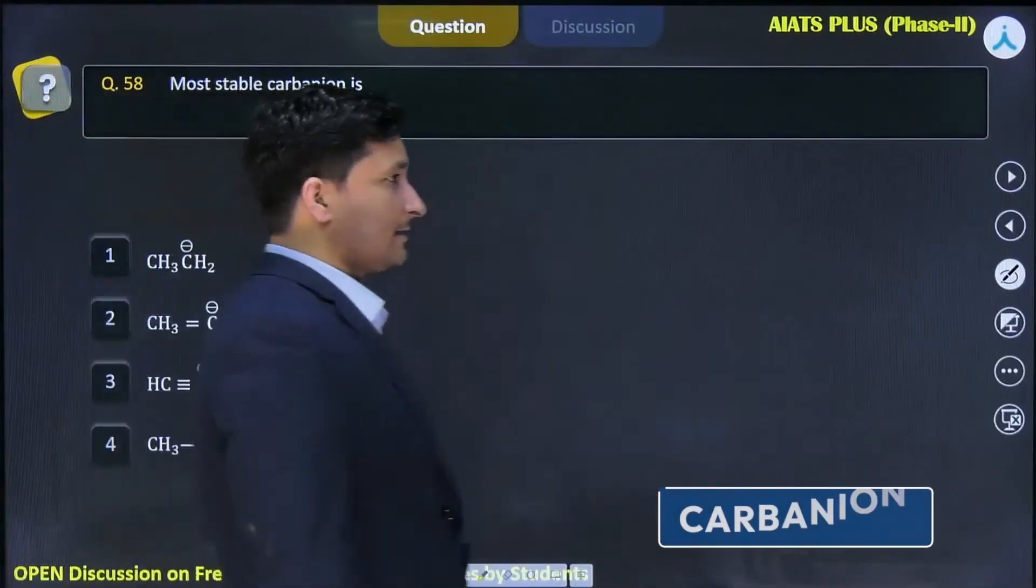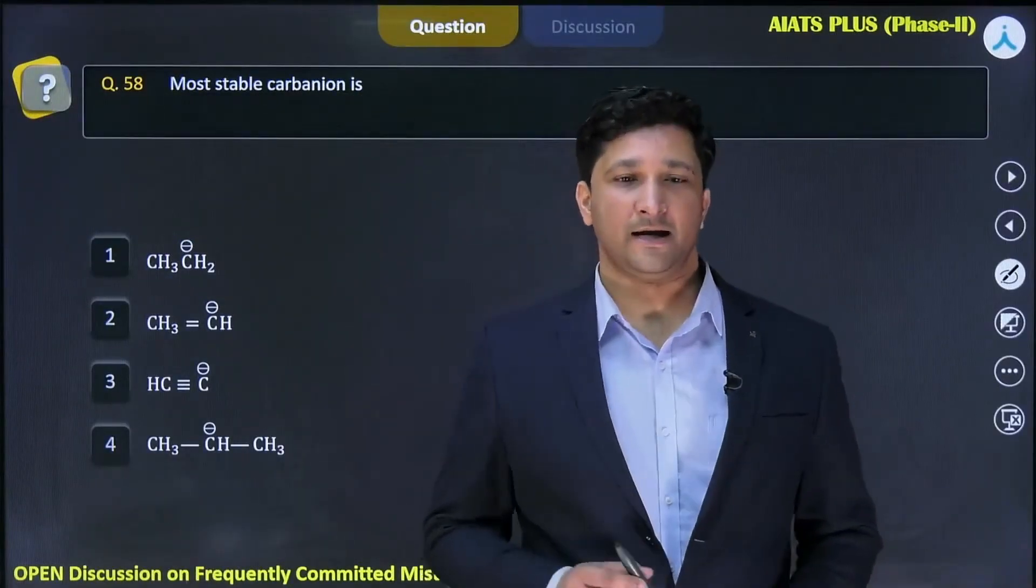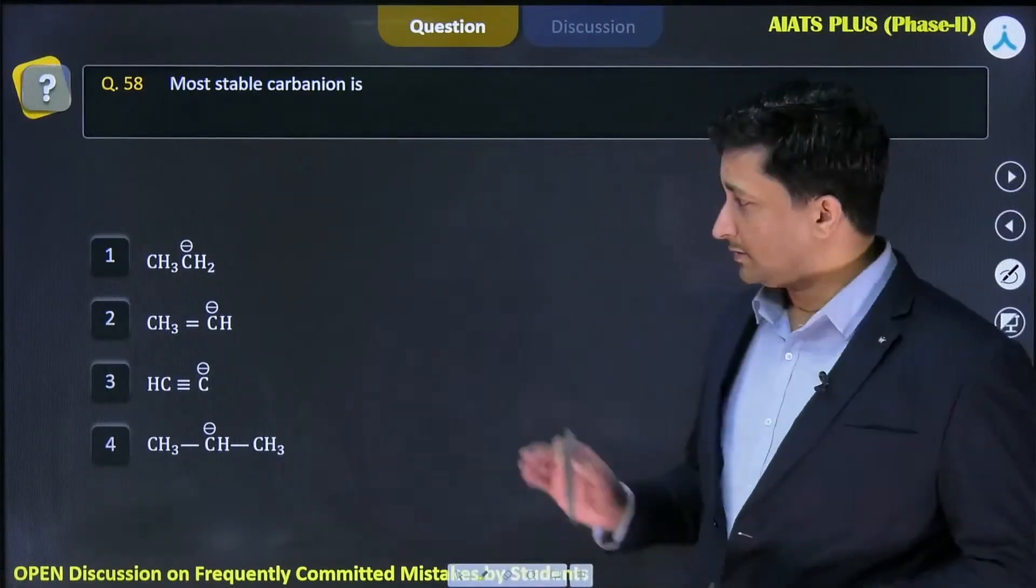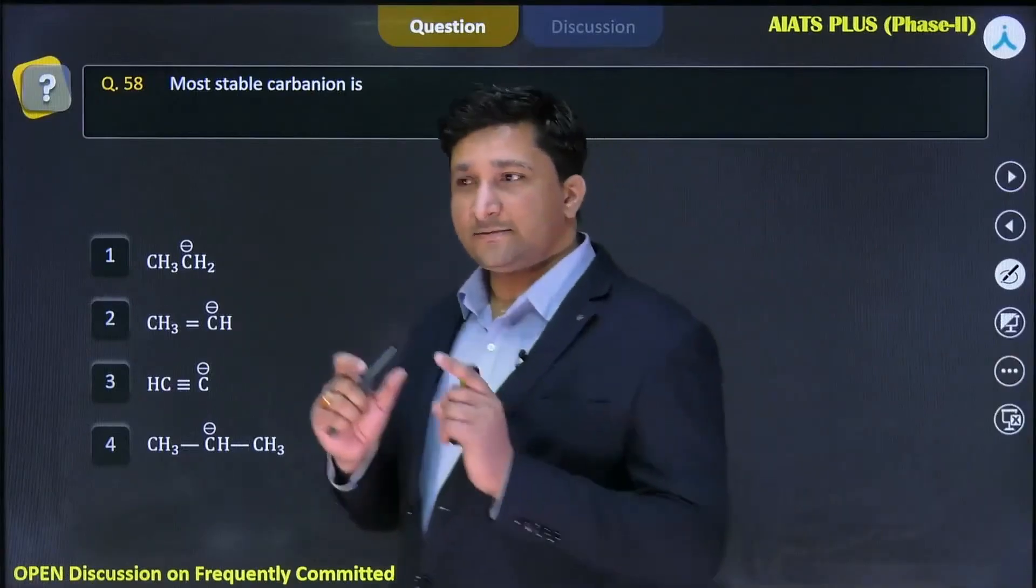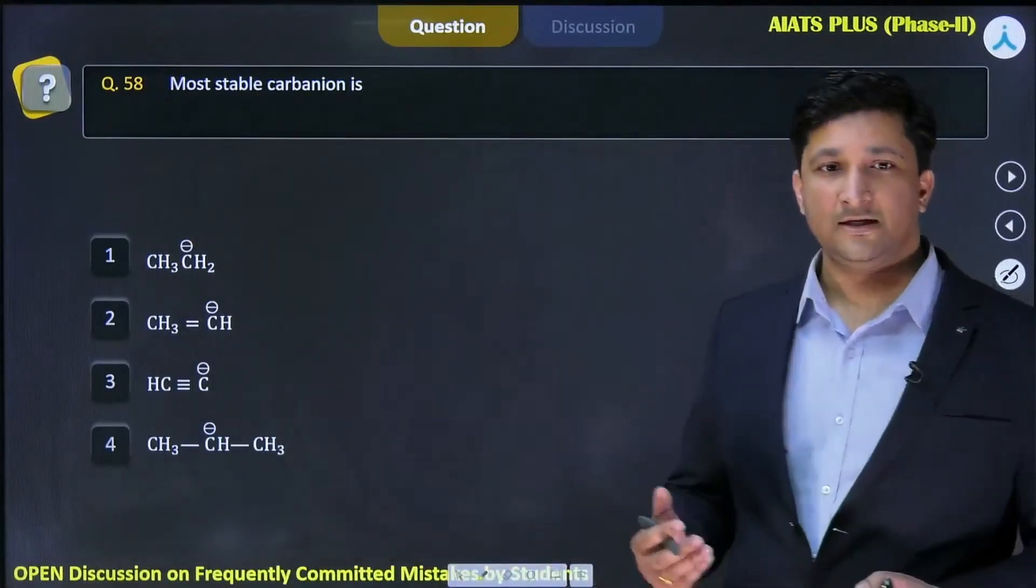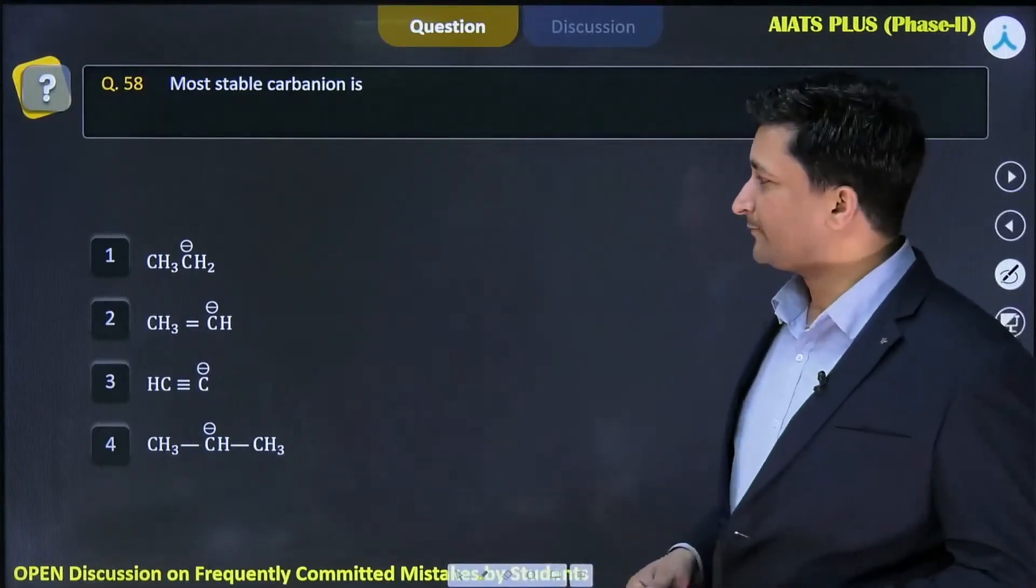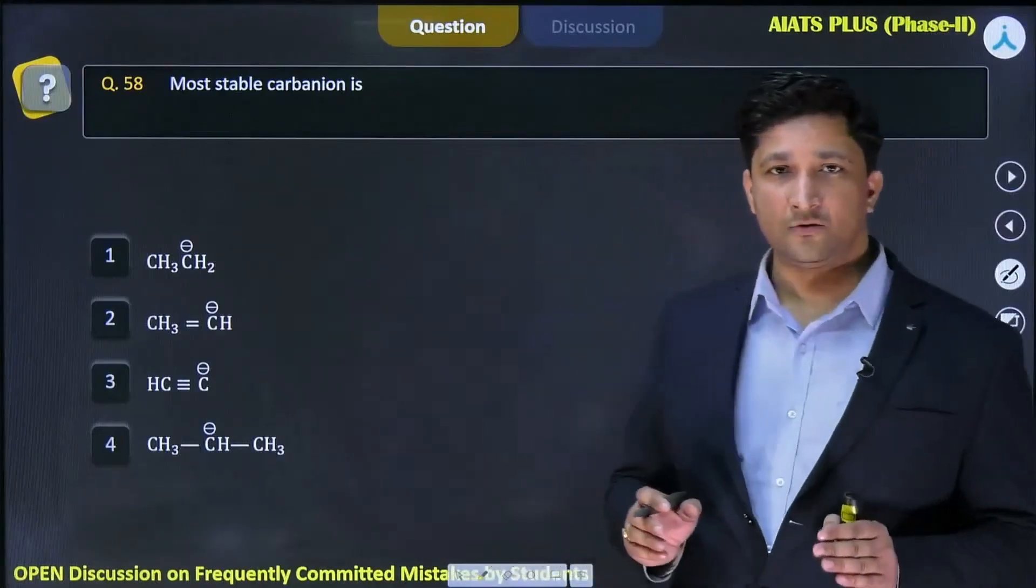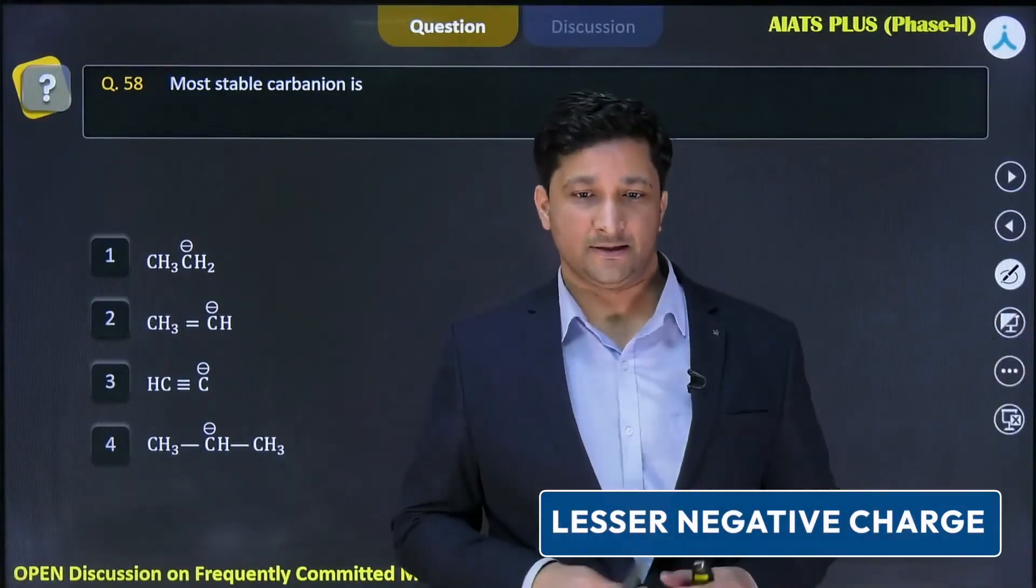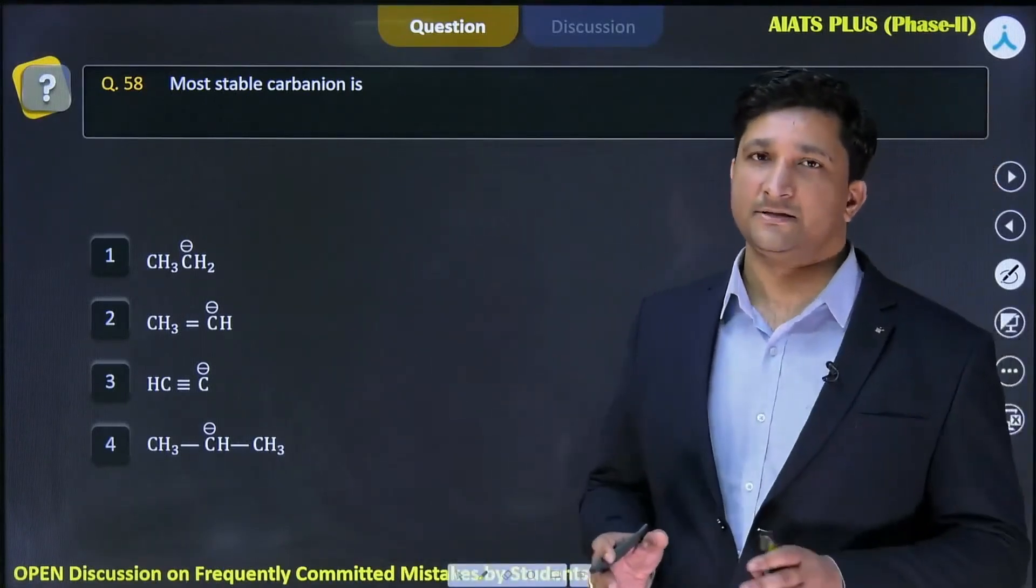The most stable carbanion - we have to look at the charge here. If charge is more, then definitely the substance will be very reactive and stability will be less. So we have to find out an organic compound or group where lesser negative charge is there, or the tendency to donate these negative charges is less, because charged species are reactive.